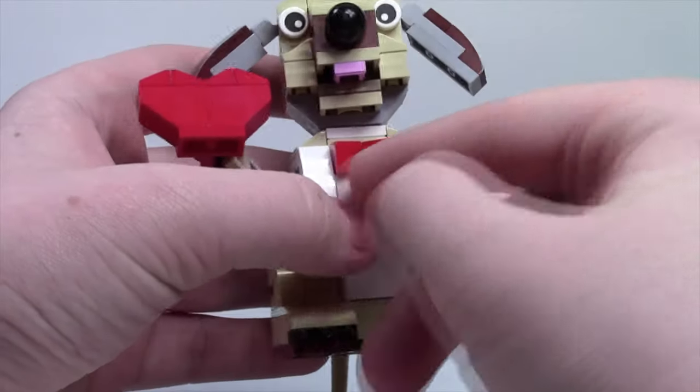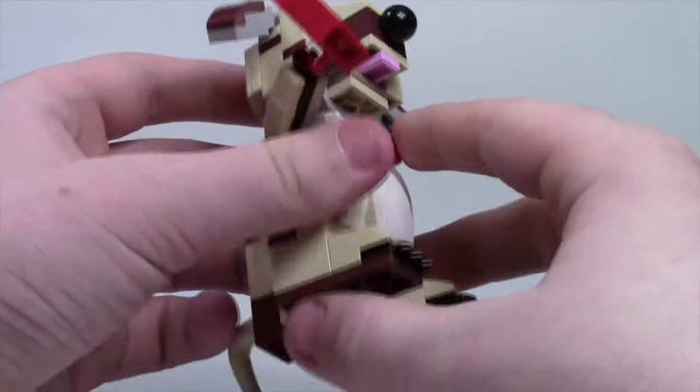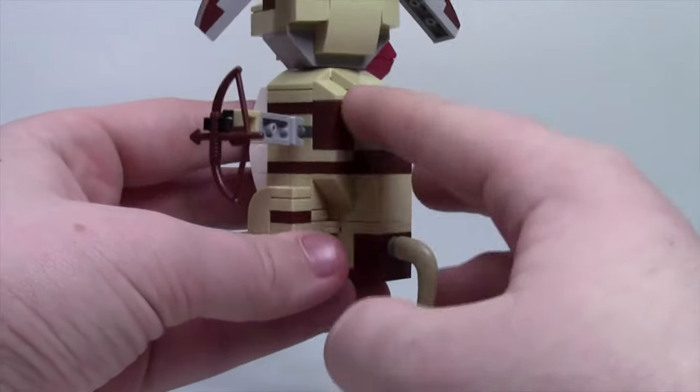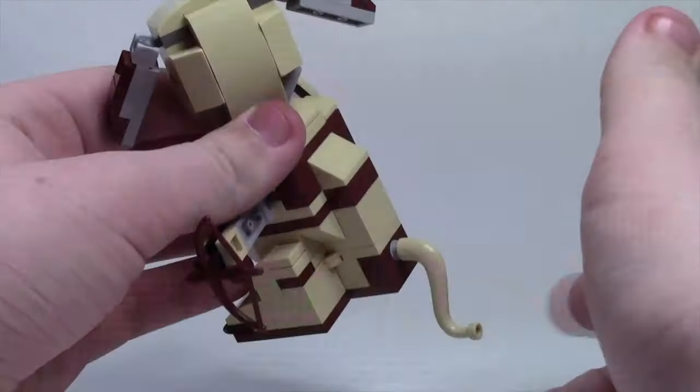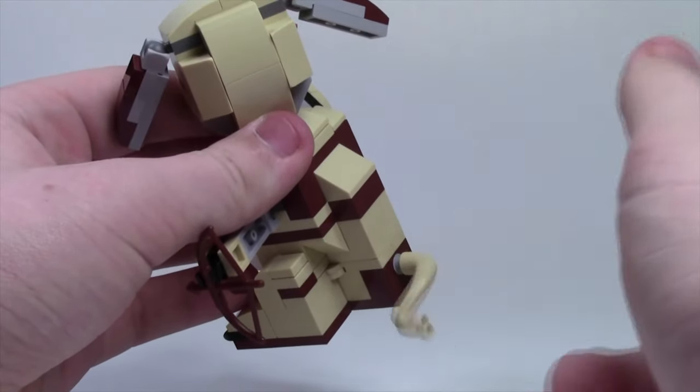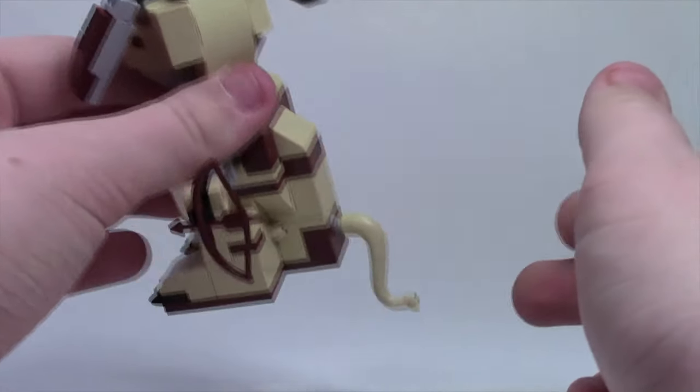I almost forgot to mention that there's like a little bow tie on the dog which is nice. The back here again more 3D slopes and stuff and I really like the 3D build of this I think they did a very good job. The tail does rotate 360 degrees so you could really spin it around so the dog can wag its tail.